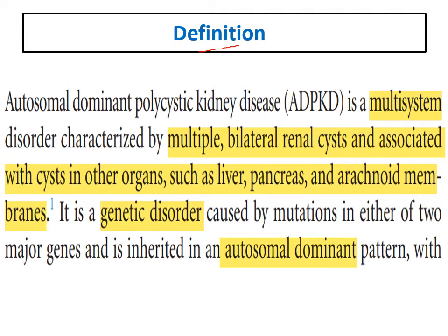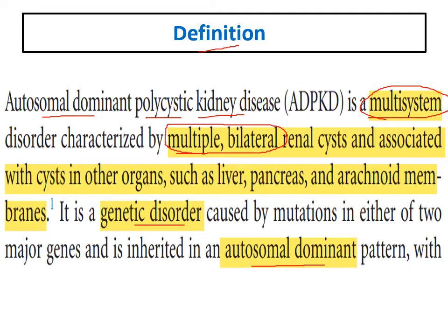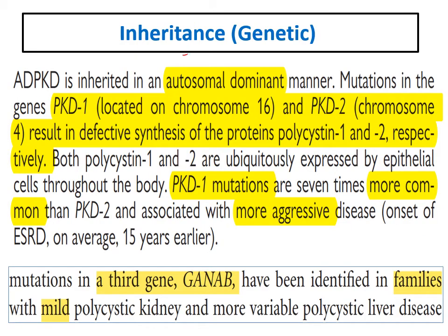Autosomal dominant polycystic kidney disease — from its name, it is an autosomal dominant genetic disorder. It is a kidney disease characterized by multiple bilateral renal cysts, making it a multi-system disease mainly affecting the kidneys, also associated with cysts in other organs, especially the liver, pancreas, and arachnoid membranes.